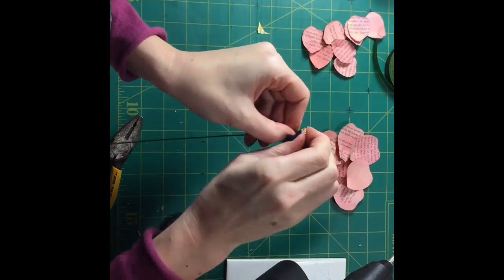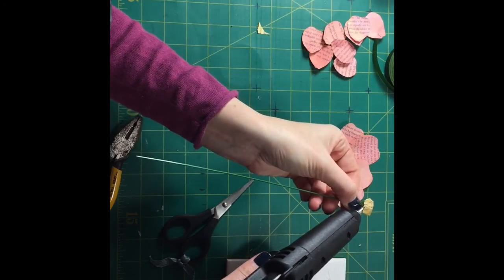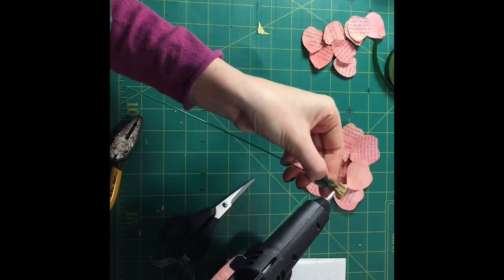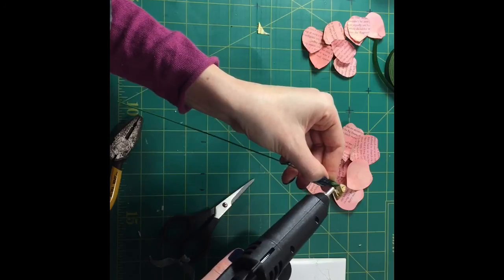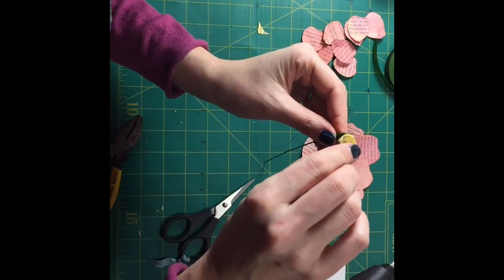It's not going to look that pretty from underneath but it's fine you won't see it once the flower is done. I think this is not completely in so we're going to just put some hot glue on there and then push it in like that.